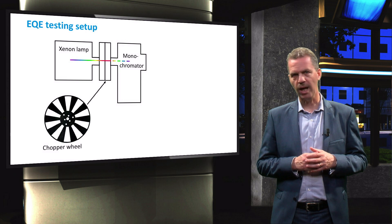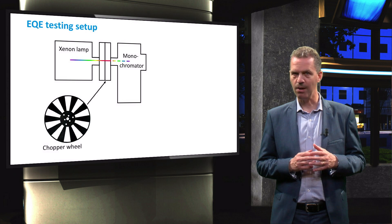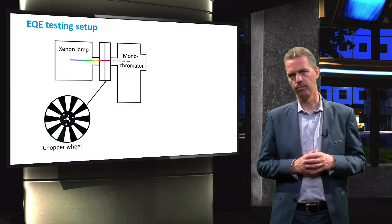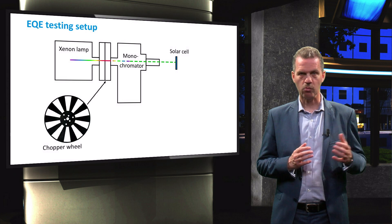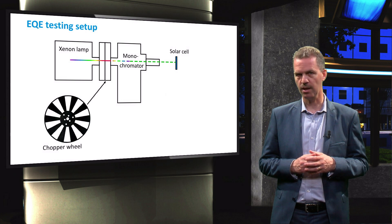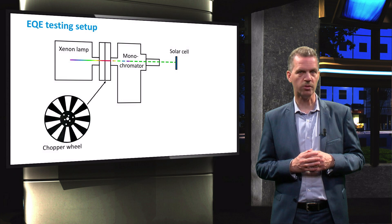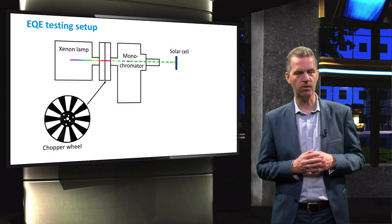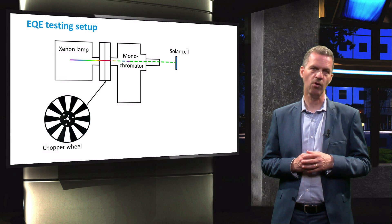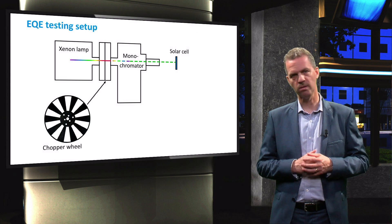The chopped light will enter a monochromator, which is an instrument that can select a very narrow band of wavelengths from the incoming light spectrum. The low-intensity chopped monochromatic light will be focused through a lens system on the solar cell under test. As a result, the solar cell will produce an alternating current signal with a very small amplitude. This signal is converted to a voltage by leading the current through a shunt resistor and measuring the voltage drop.